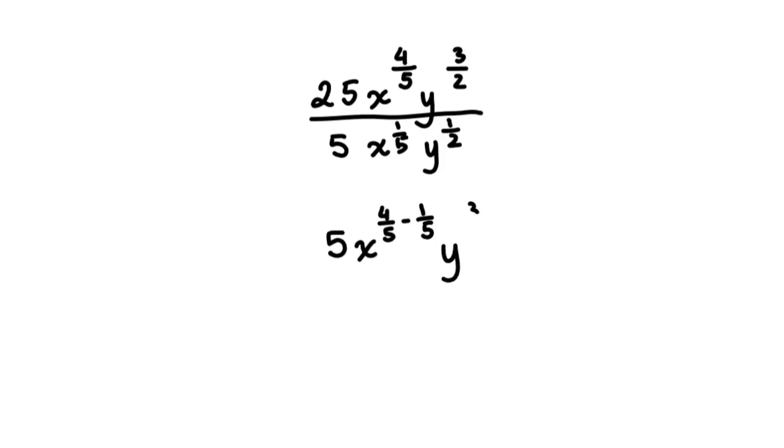So the result will be x to the power of 3 over 5, y to the power of 2 over 2. And 2 over 2 can be expressed as the exponent of 1. So the final most simplified form will be 5, x to the power of 3 over 5, y.